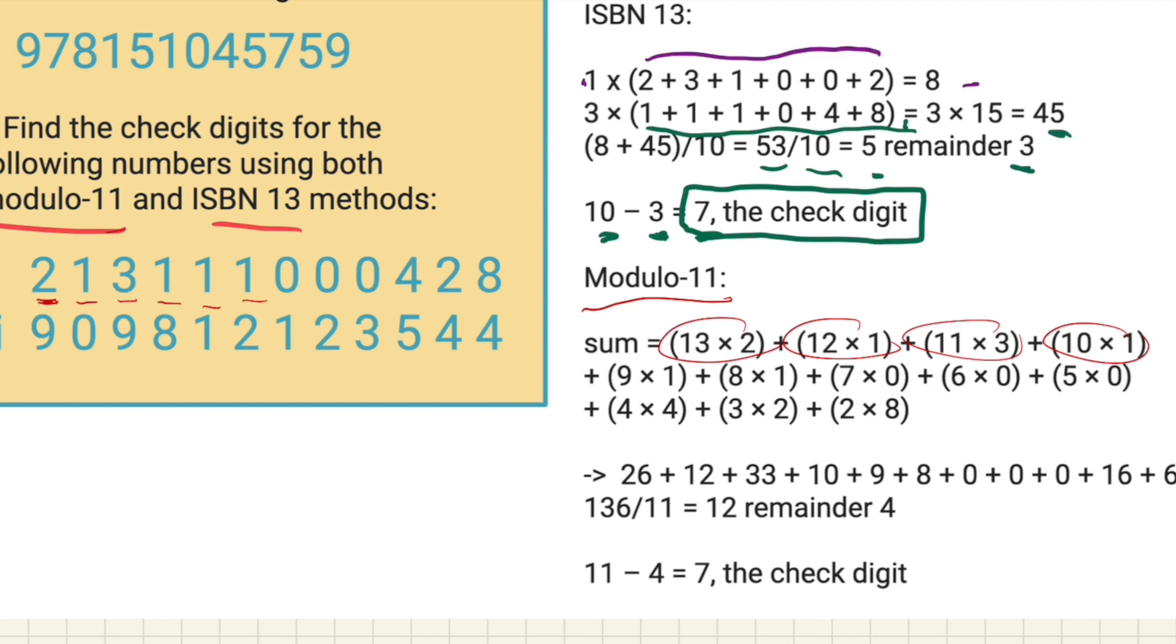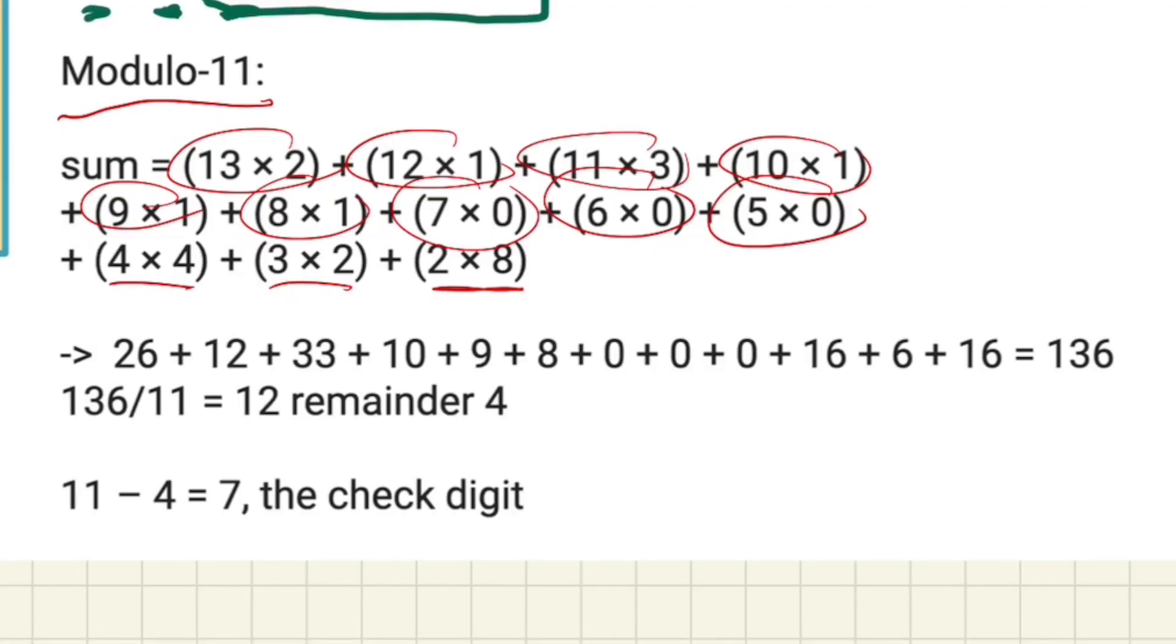9 times 1, 8 times 1, 7 times 0, 6 times 0, 5 times 0, 4 times 4, 3 times 2, and 8 times 2. So we've covered all of these. Once we've done that, we're going to add them all together, so 13 times 2 is 26. We add it to the 12, to the 33, and we carry on all the way down, until we get a total, in this case, of 136.